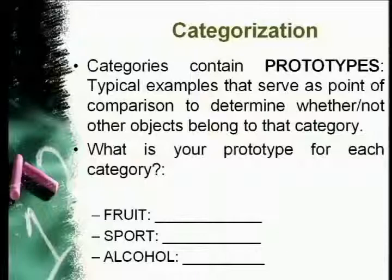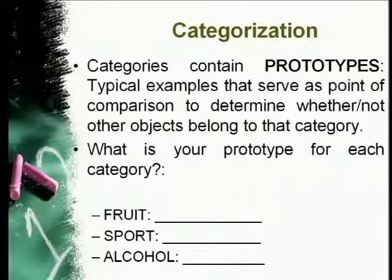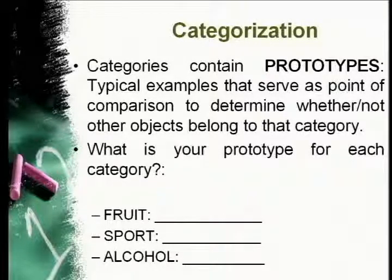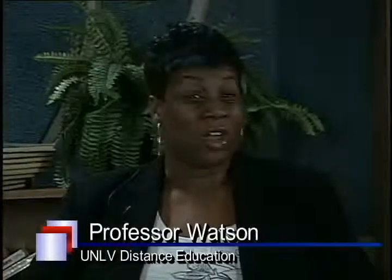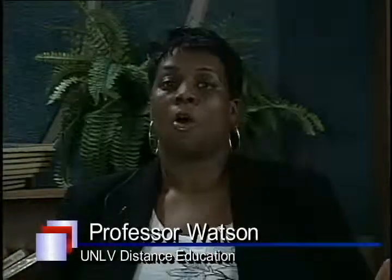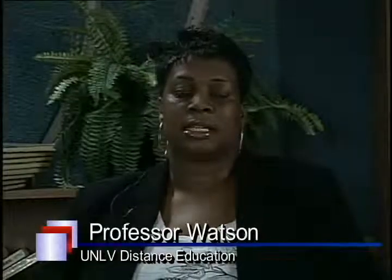Categories contain prototypes. Prototypes are typical examples that serve as a point of comparison to determine whether other objects belong to a category. For instance: what is your prototype for a fruit? For a sport? For alcohol? With fruit, we normally think of an orange or an apple — even though a tomato is technically a fruit by definition. So we have these prototypes and categories set up, and what a stereotype does flows from there.